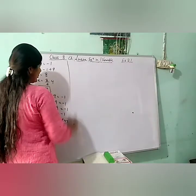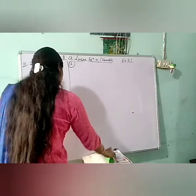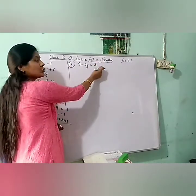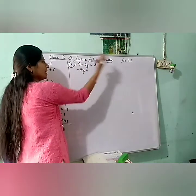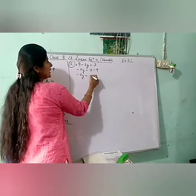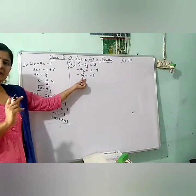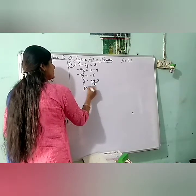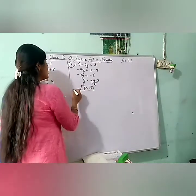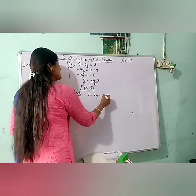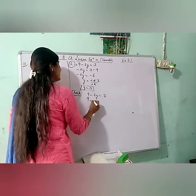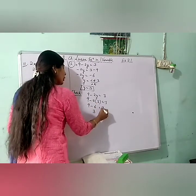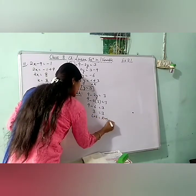Part 12: 9 minus 2y equals 3. Taking 9 to the right hand side — it is positive so it becomes negative — giving minus 2y equals 3 minus 9, that is minus 6. Now minus 2 is multiplied with y, so dividing both sides: minus minus cancels, and 6 divided by 2 gives y equals 3. Checking: 9 minus 2 times 3 equals 9 minus 6 equals 3 — RHS is also 3. LHS equals RHS, hence verified.